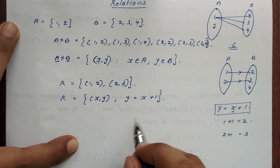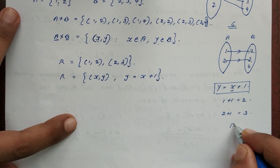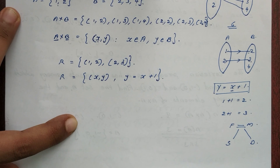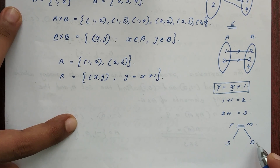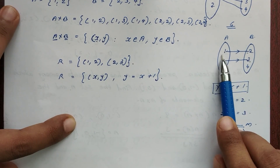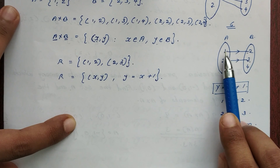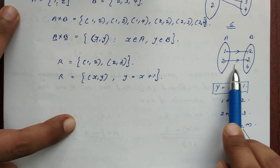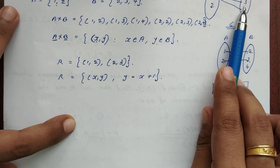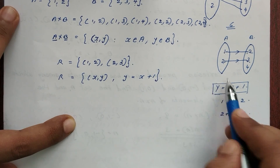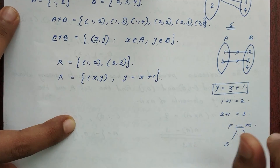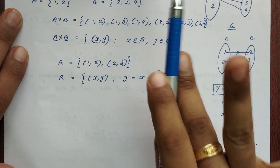How do we understand a relation? We can think of it like the relationship between father and mother, son and daughter in real life. In mathematics, we represent the same concept using sets and numbers with an arrow diagram. A relation is essentially a defined connection between elements.